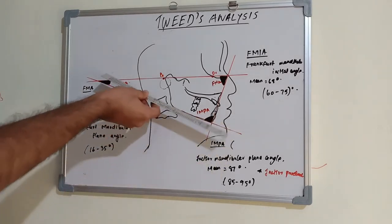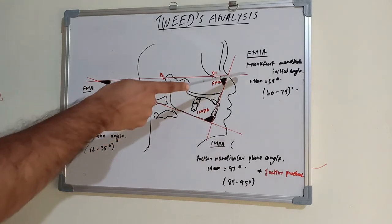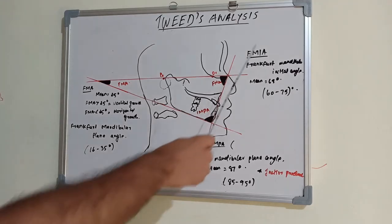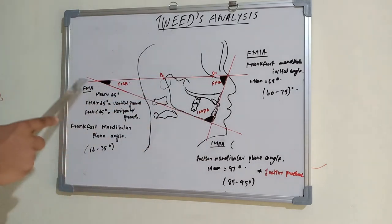This is going tangential to the lower border of mandible, and another one is our FH plane that is connecting porion and orbitale, and the third one is the lower central incisor long axis. So we connected it and made a triangle.